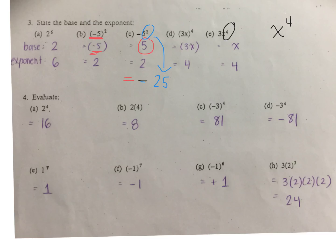Check your answers for number 4. Positive 16. 2 times 4 is 8. Negative 3 repeated multiplied by itself 4 times will result in a positive. And d — why is the answer negative instead of positive? There's a negative before the 3, but it's not in a bracket.